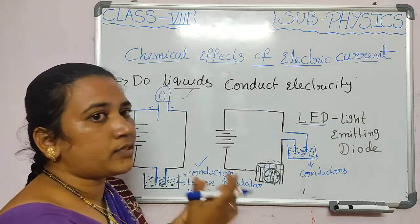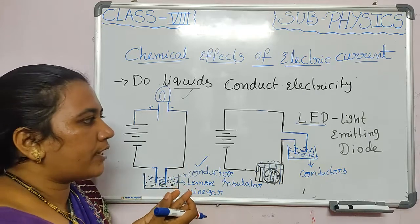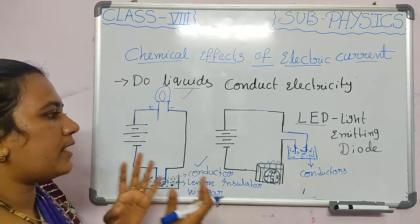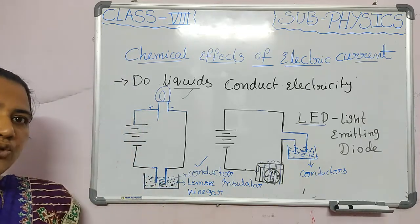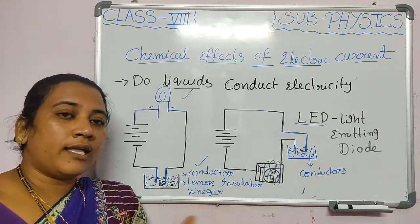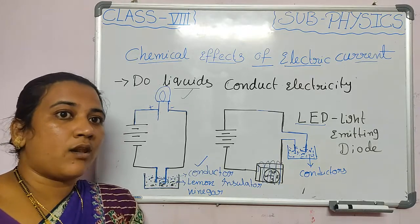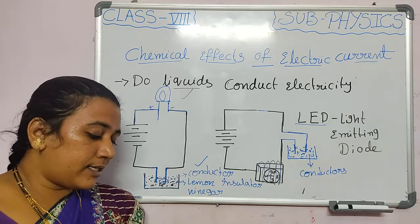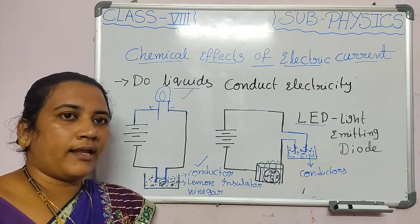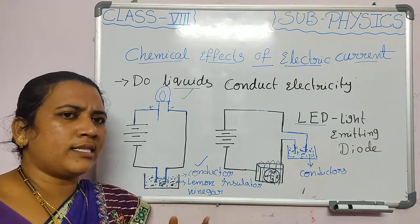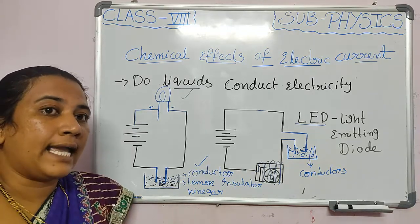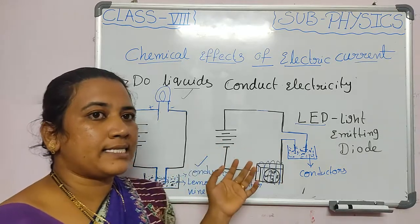These are the methods to test liquids using simple testers. Many different liquids can be tested: lemon juice, vinegar, tap water, salt water, pond water, kerosene, oil, diluted acid solutions like HCl, and base solutions. We can test whether all these solutions can conduct electricity or not using these simple testing methods.